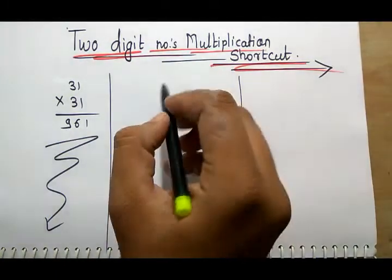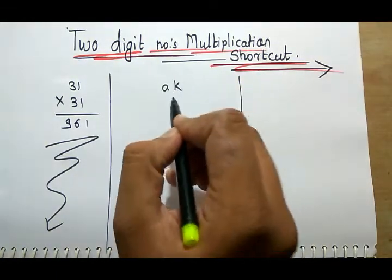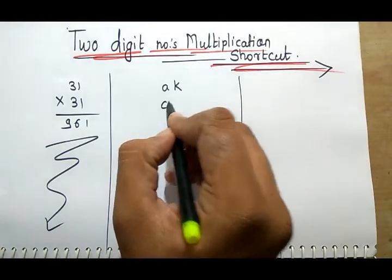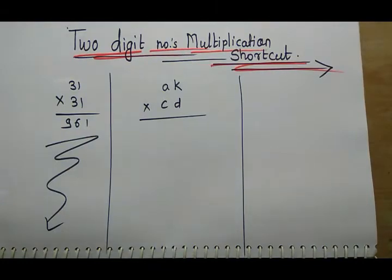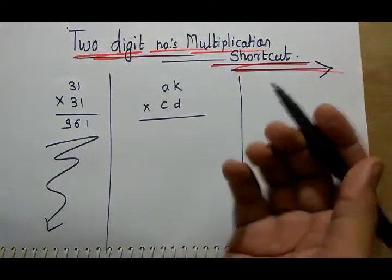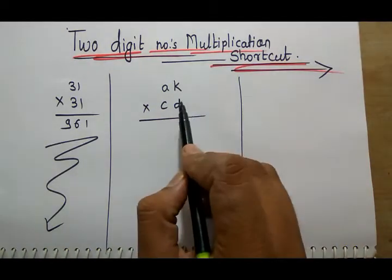The shortcut is AKCD. Assume that there are two numbers, one is AK and the other CD. We will multiply them but the pattern is different. Most of the time in competitive exams we have time limitation with solving burden, so we will apply this multiplication.